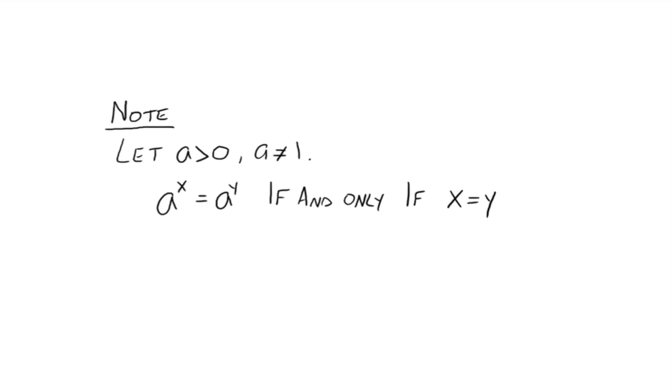All right. So now let's go to a note. So let a be a real number greater than 0, not equal to 1 again. Then a to the x is equal to a to the y if and only if x and y are the same. So what this is really saying is if you have an equation and you have the base on each side is the same number, then the exponents have to be equal. Does that make sense?